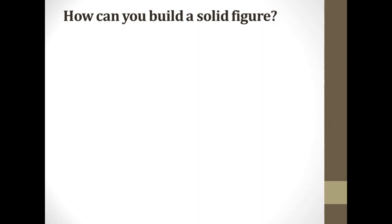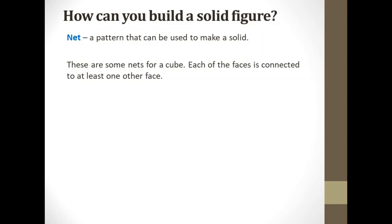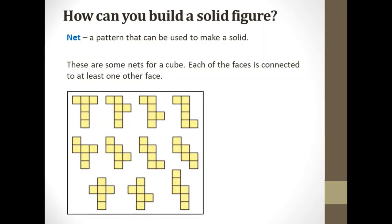How can you build a solid figure? So we use net in order to build a solid figure. Nets are patterns that can be used to make a solid. These are some nets for a cube. Each of the faces is connected to at least one other face. So if we are going to fold these nets, we can form a cube.